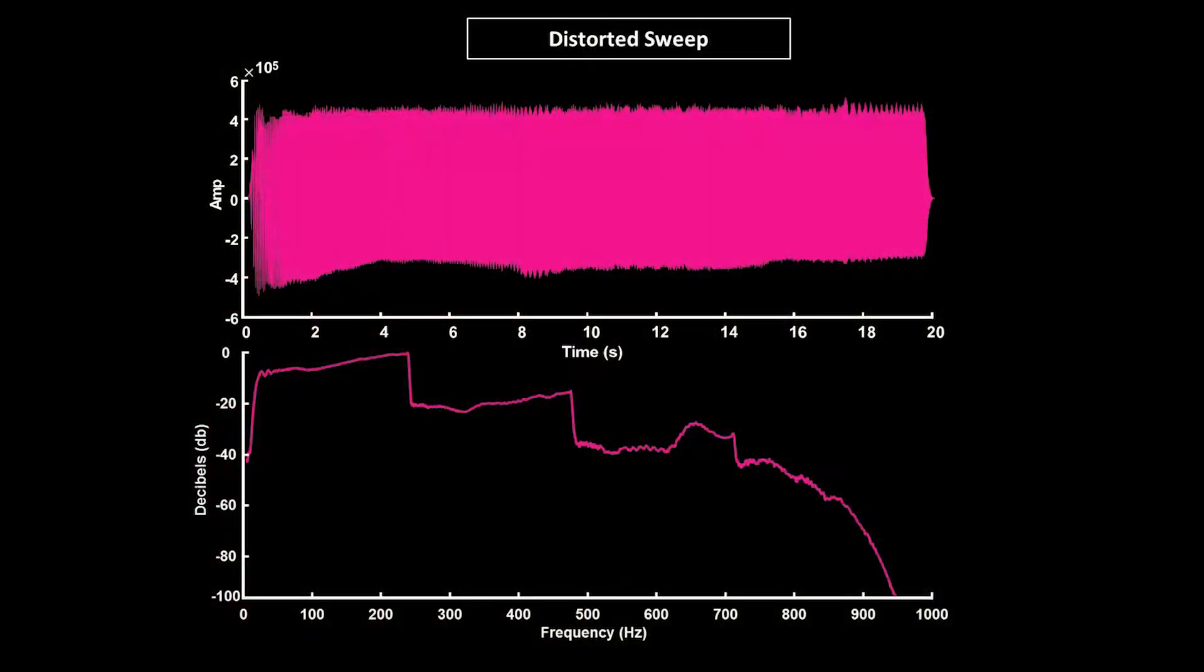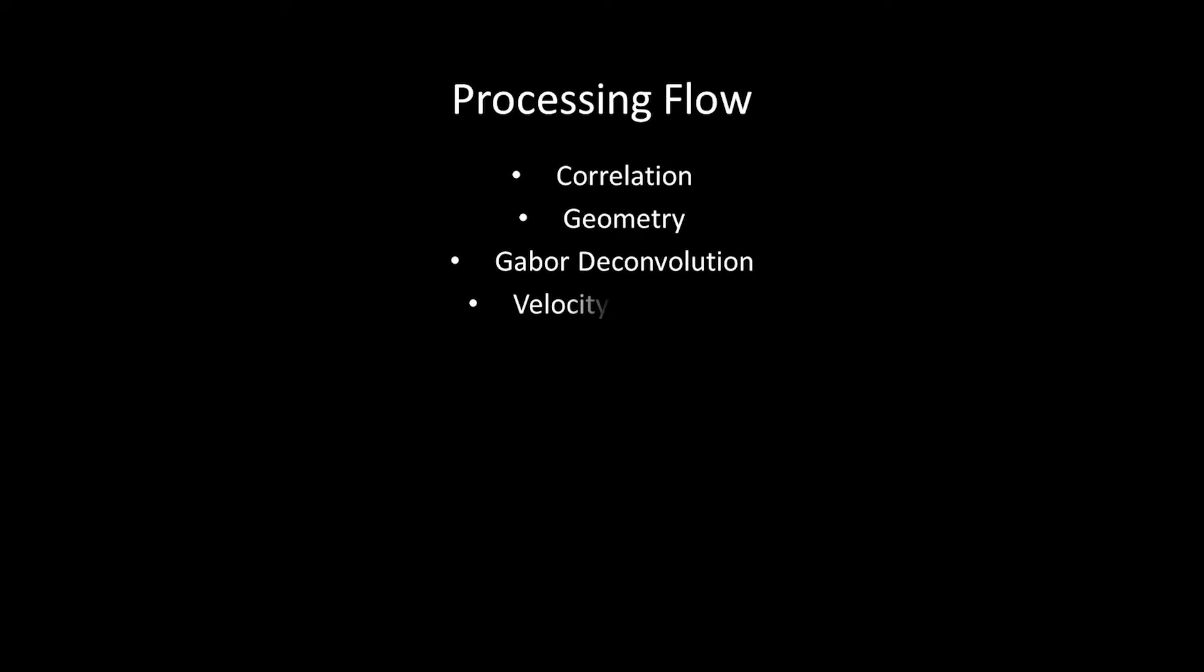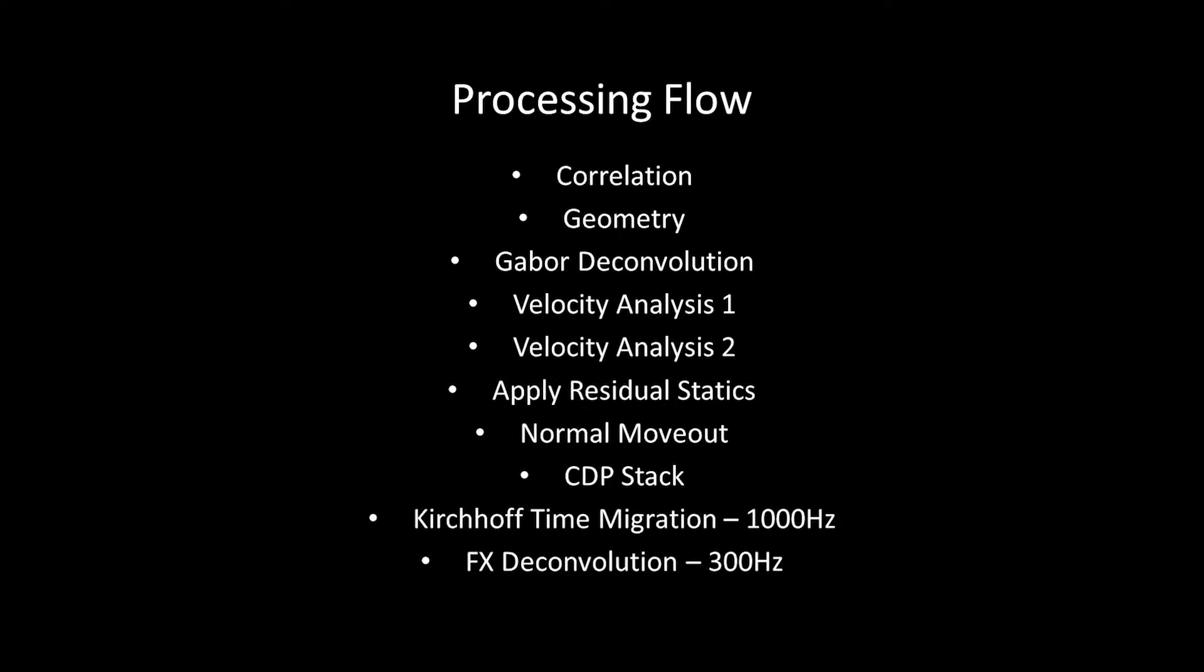In my previous video, I showed and played recordings of the first, second, and third harmonics as decomposed from a harmonically contaminated sweep. In this video, I'm going to show you the results of processing a seismic test line with this sample processing flow. Armed with the ability to precisely extract harmonics from sweep recordings, we're going to look at the first process in the flow, correlation.